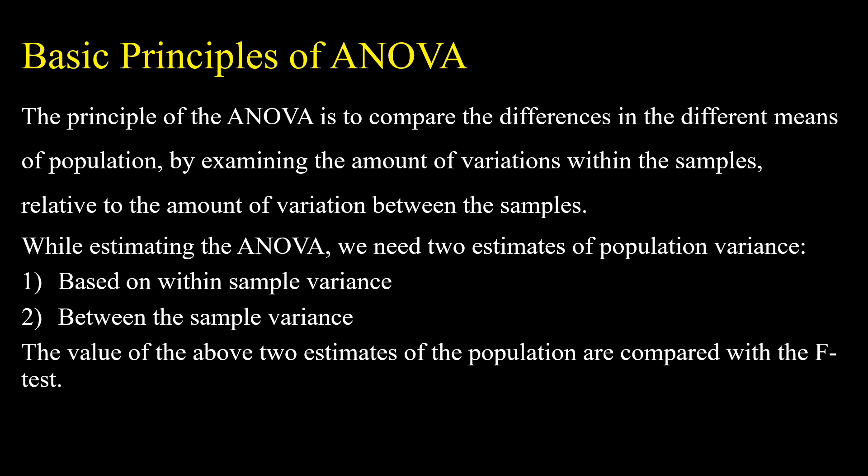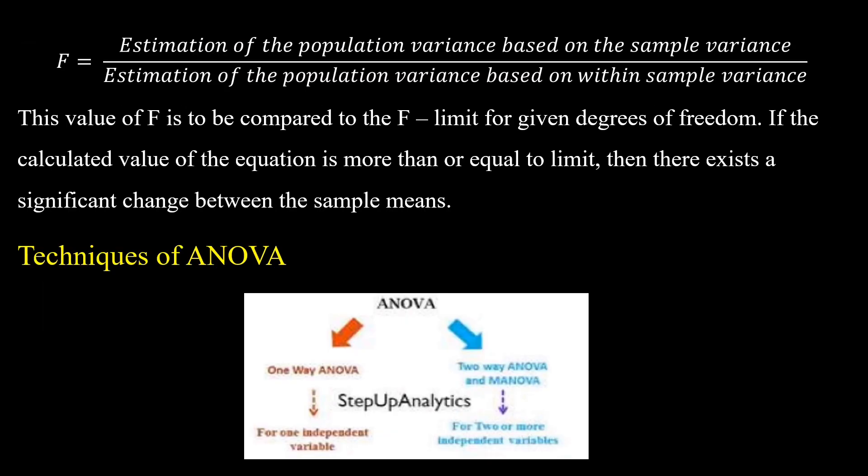What are the basic principles of ANOVA? ANOVA works on two basic principles: it compares the differences in the different means of populations by examining the amount of variation within the samples and the amount of variation between the samples — based on within-sample variance and between-sample variance. That is called the F test. F equals the estimation of population variance based on between-sample variance divided by the estimation of population variance based on within-sample variance. This value of F is compared to the F limit for given degrees of freedom. If the calculated value is more than or equal to the limit, then there exists a significant difference between the sample means.